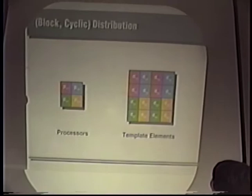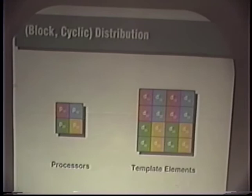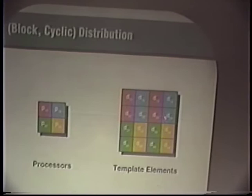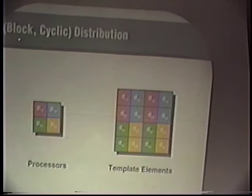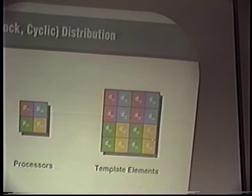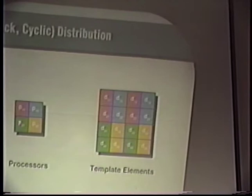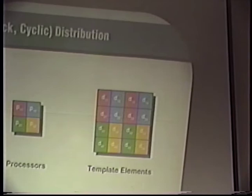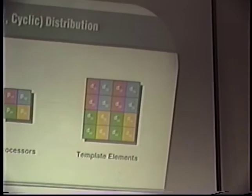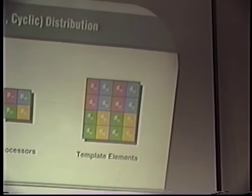The block-comma-cyclic distribution means: if you have a two-by-two processor array and a four-by-four template, block distribution for rows means the red and blue processors get the first two rows and the green and gold processors get the second two. Cyclic distribution for columns means red and green processors get every other column, and gold processors get every other column. Cyclic distributions are useful for load balancing — useful in triangular calculations so that you don't end up with some processors getting enormously more work than others.